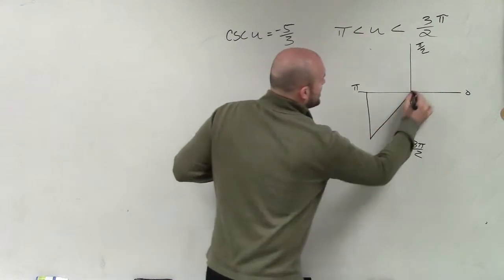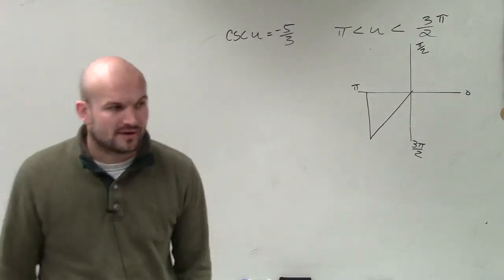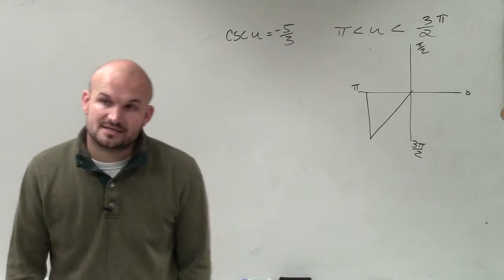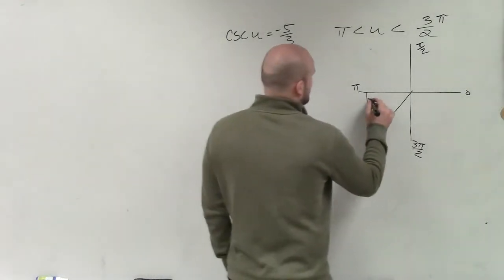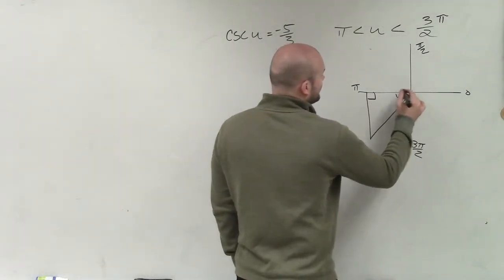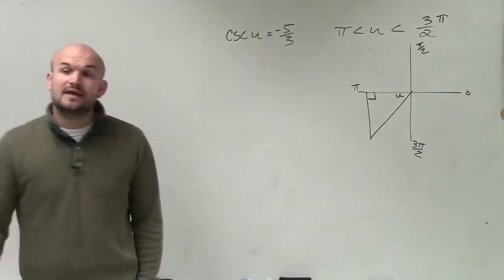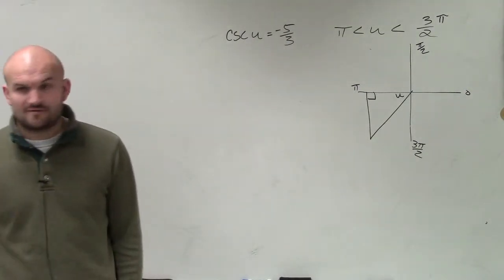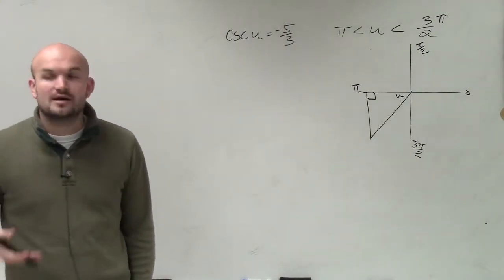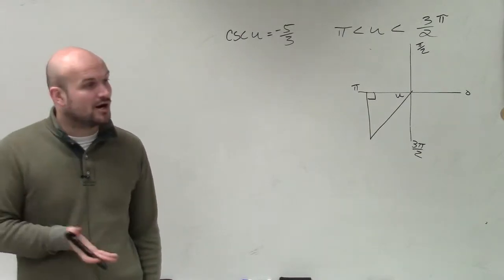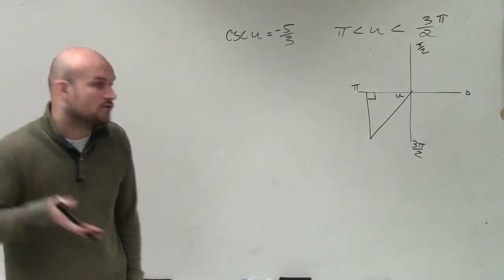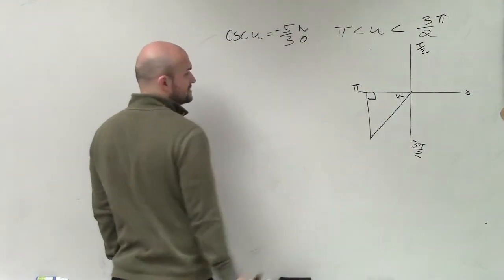So all of my triangles look exactly the same, where I have to make sure I create it perpendicular to the x-axis and where my angle is going to be a central angle. Now I need to determine, well, what is the cosecant function? What is that ratio? Well, cosecant is the hypotenuse over the opposite.